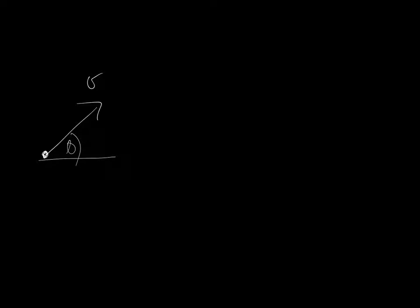We need to produce the whole trajectory from the launch point, essentially until the projectile hits the ground again — and that's what we need to calculate. We're going to calculate that using an equation of motion. The first job is to split it up into its two components rather than using an entirely vector approach, to keep things simple. We need to split this velocity vector into its y velocity and its x velocity.